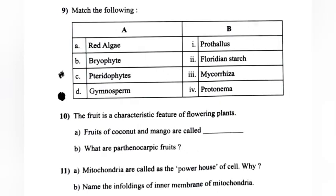Question 9: Match the following. Red algae — Floridian starch. Bryophyte — Protonema. Pteridophyte — Prothallus. Gymnosperm — Mycorrhizae.